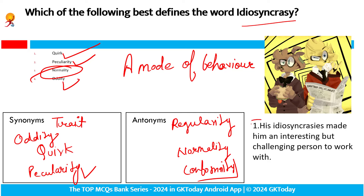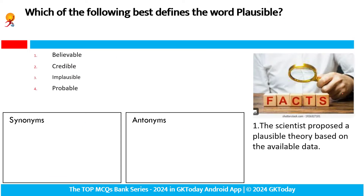His idiosyncrasy made him an interesting but challenging person to work with. So uska mode of behavior hai — usse woh ban gaya interesting, but saath hi challenging person to work with. Fine. Let's move to the next one.